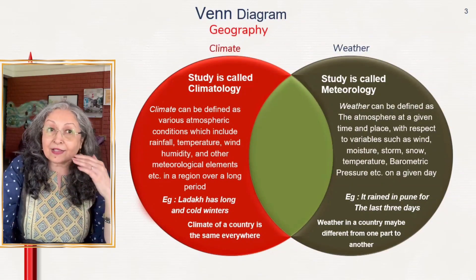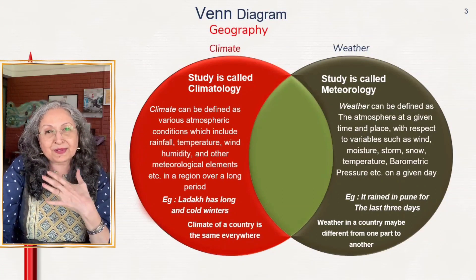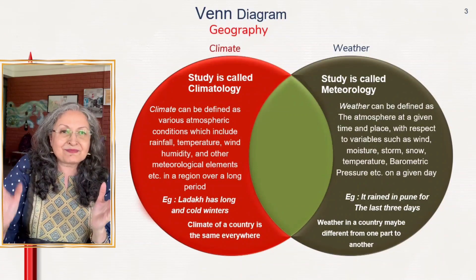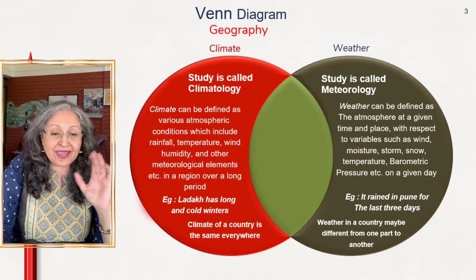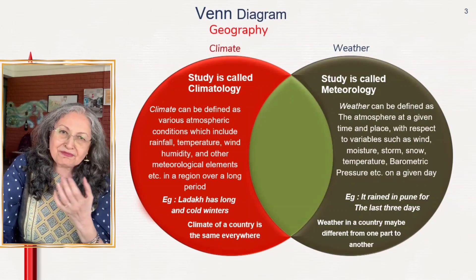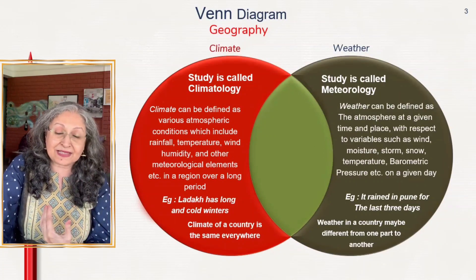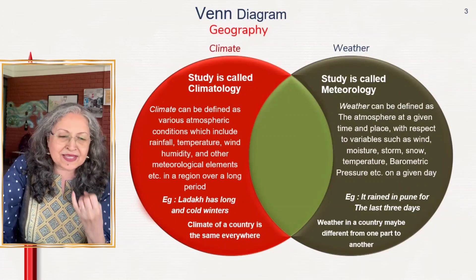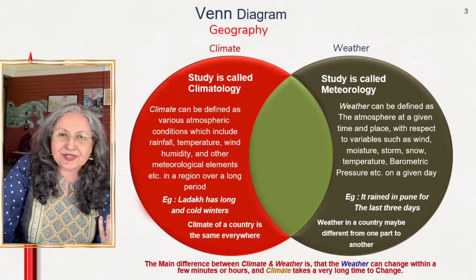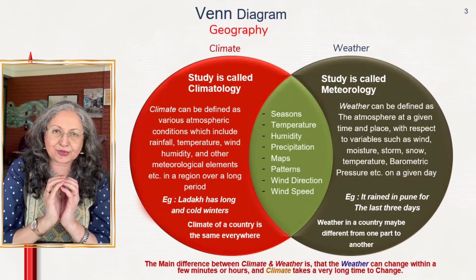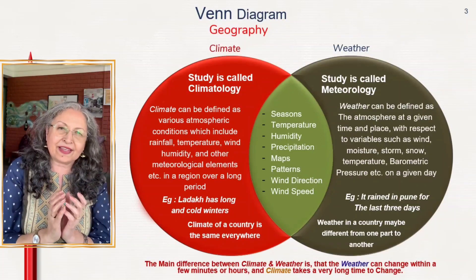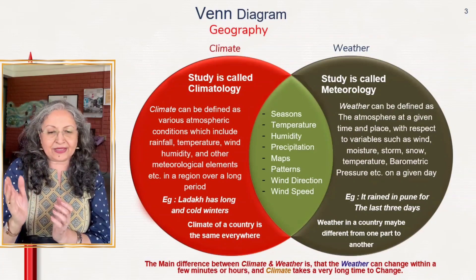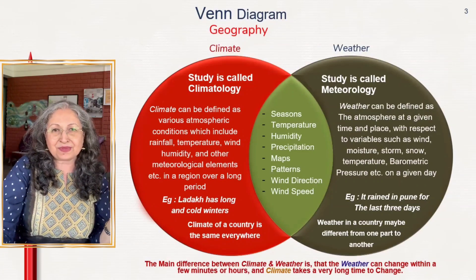For instance, Ladakh has long and cold winters — that's climate. But for weather, I talk about my own city Pune: it rained in Pune for three days. This shows the difference between weather and climate. Similarly, climate is the same everywhere over a long period, while weather is changing all the time. The similarities — seasons, temperature, humidity, precipitation, wind direction, and so on — are mapped in the central portion. One important tip: always put a bottom line that captures the essence of your Venn diagram. Here: weather can change every few minutes; climate takes a very long time to change.